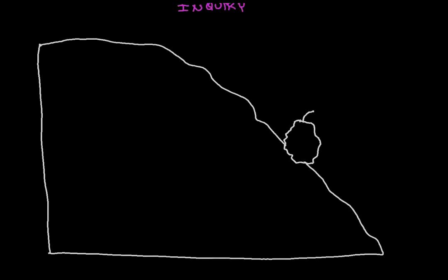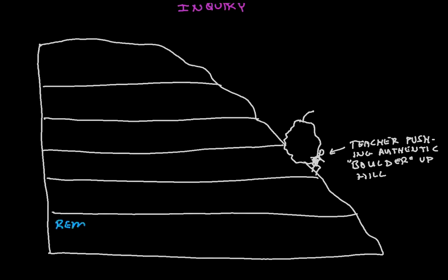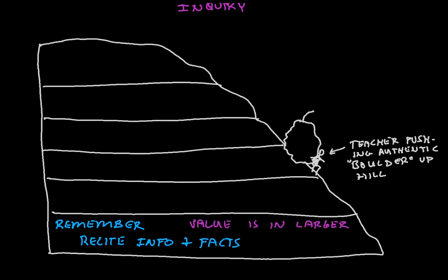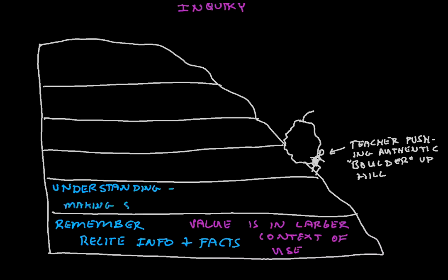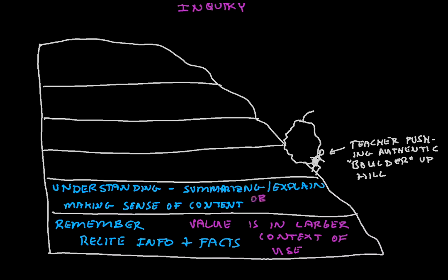So now let's connect this to Bloom's Taxonomy. We'll start at the bottom with Bloom's Remembering — that's reciting information and facts. It can have value, but it has more value if it's applied to something authentic. Level 2 is understanding: making sense of content, interpreting, summarizing, explaining. Traditional testing often stops here at this level.